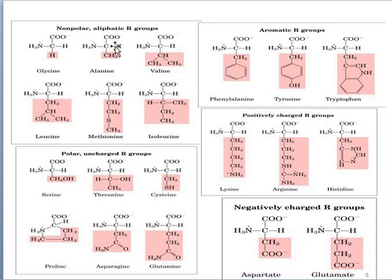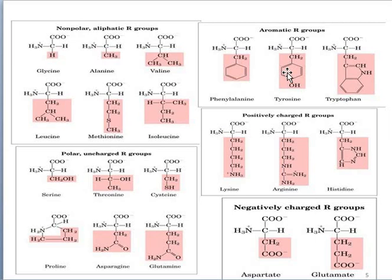Here are some examples. This is the non-polar aliphatic group. Next is the polar and uncharged R group — they are polar but uncharged. There is also the aromatic group present in the amino acid chain. Next is the positively charged R group, and the last one is the negatively charged R group.